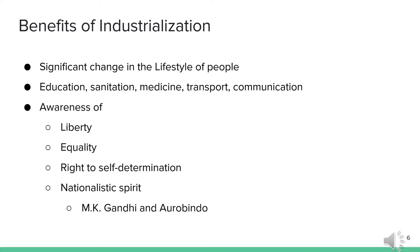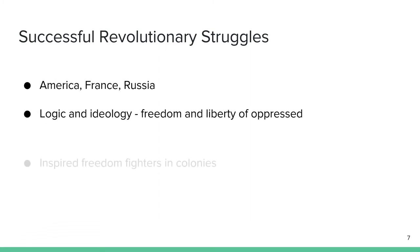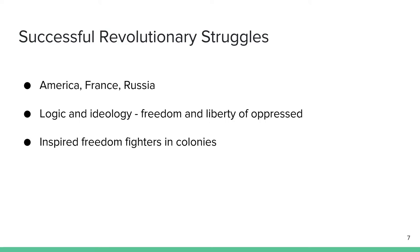Mohandas Karamchand Gandhi and Aurobindo are two striking examples of how the Western model of education and experience of European life contributed to the nationalistic spirit in colonies like India. Armed with the knowledge of benefits of liberty, the nationalistic leaders in many colonies staked a serious claim for freedom, equality, and an end to foreign domination. The knowledge of successful revolutionary struggles, especially those in America, France, and later Russia, inspired the freedom fighters in the colonies. The matter gained strength with the international scene, as the logic and ideology behind the allies' involvement was that these wars were fought for the sake of freedom and liberty of the oppressed peoples.